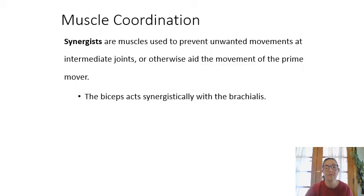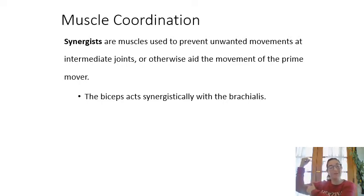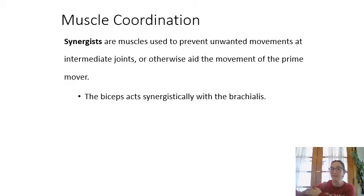Along with a prime mover, we also have synergists — usually smaller muscles that help out with the main action. The biceps flexes the elbow, but it's not the only muscle doing that job. Underneath it is another muscle called the brachialis, which acts synergistically with the biceps brachii to flex the elbow joint.